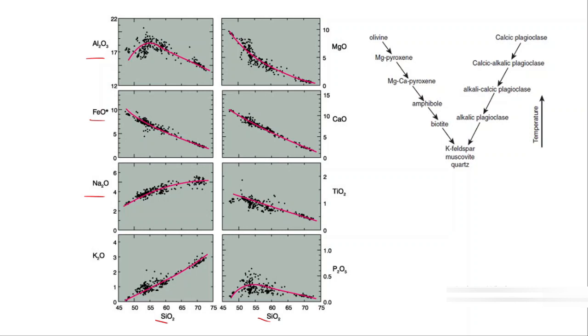Silica crystallizes at the last. If we look at Bowen's reaction series, which is the basis of crystallizing magma or crystallizing minerals from a magma in a crystallization igneous system, we can use it as a reference.